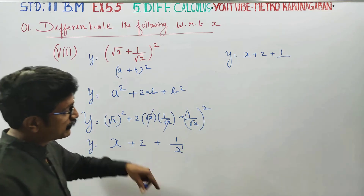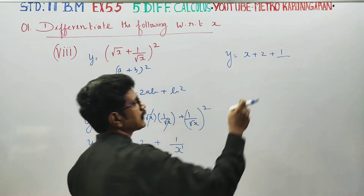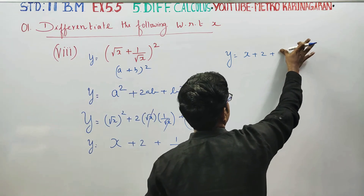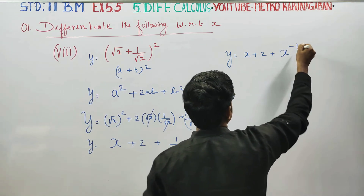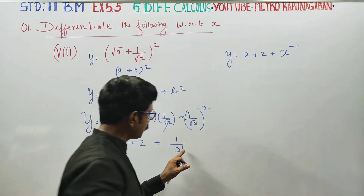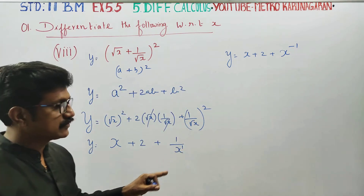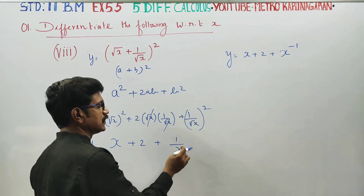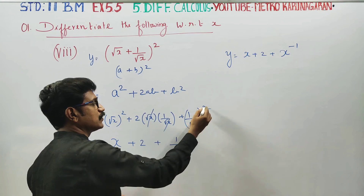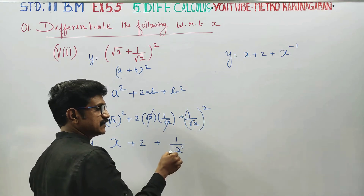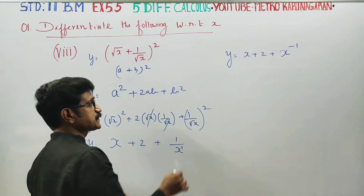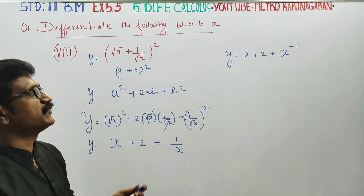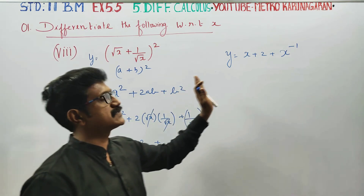After cancellation: y is equal to x plus 2 plus 1 by x. Here x has power 1, and 1 by x is x power minus 1. So now we have the function ready to differentiate.